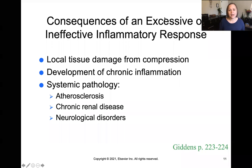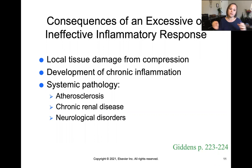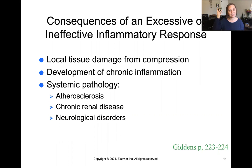Our body does a great job managing inflammatory responses until it doesn't. There are consequences of an excessive or ineffective inflammatory response. For a localized response, the tissue itself can be damaged from compression if there's no room to swell. There's also the possibility of developing chronic inflammation. Chronic leaking of blood vessels and chronic stress on the body can lead to problems such as atherosclerosis, plaques in the arteries, chronic renal disease, and neurological problems — because our brains really need good perfusion and oxygenation to thrive.